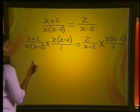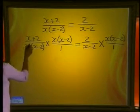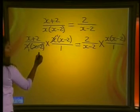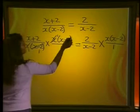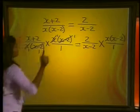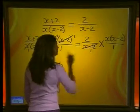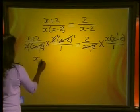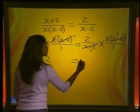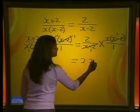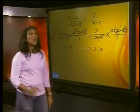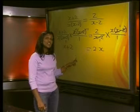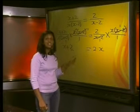Now we look to cancelling terms. x divides into x one time. x minus 2 divides into x minus 2 once on both sides. After cancelling, we are left with x + 2 = 2x. Although it contained x² initially, we now have a simple linear equation.